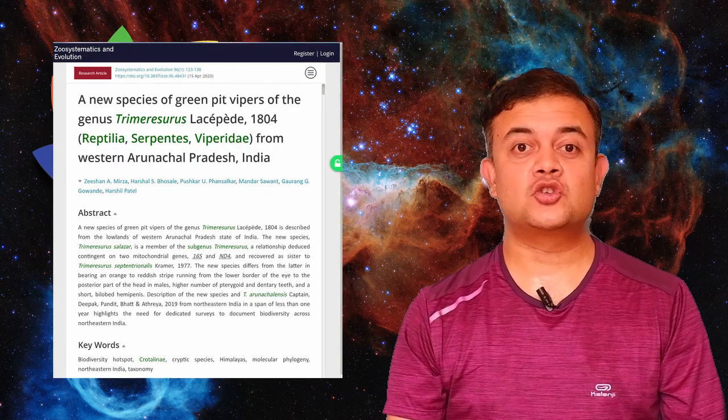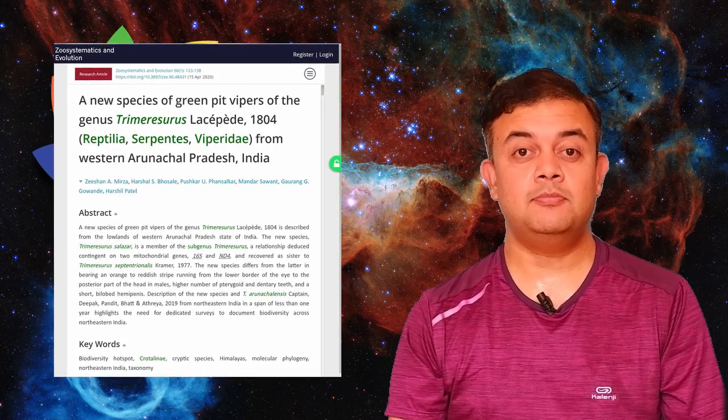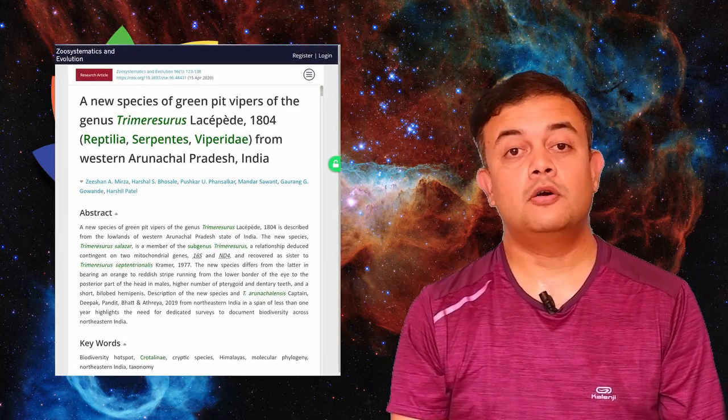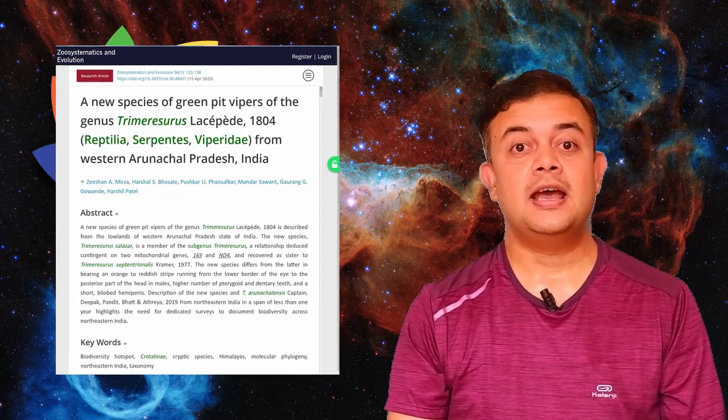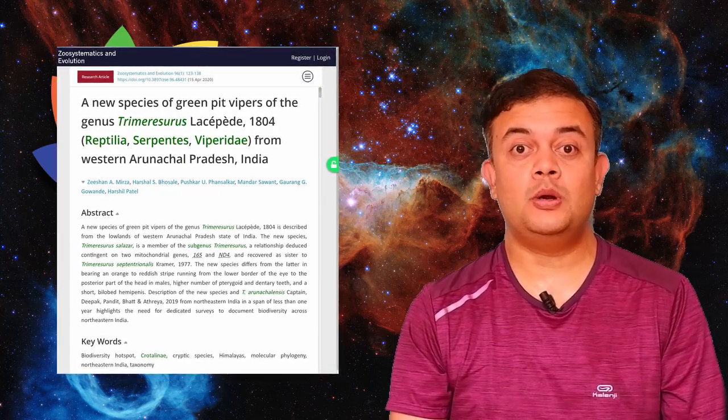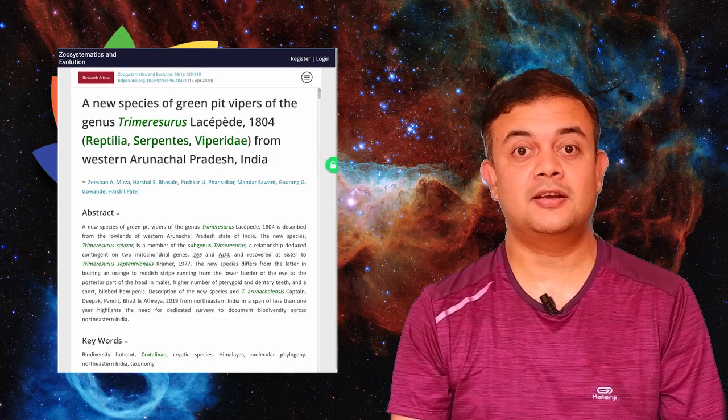By the way, usually most of the taxonomists, the convention is that they name the species after their, you know, friends or boss, a form of appeasing them, you see? The quid pro quo or bribing them, getting their favours in back. But Zeeshan A. Mirza, you know, the first author of this paper from NCBS was different kind of taxonomist, a taxonomist with creative spark.